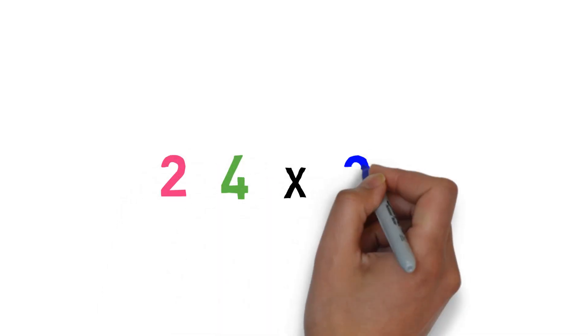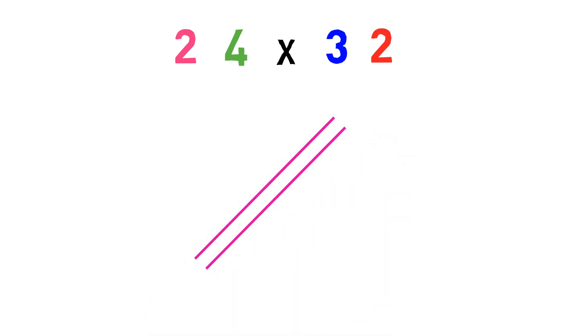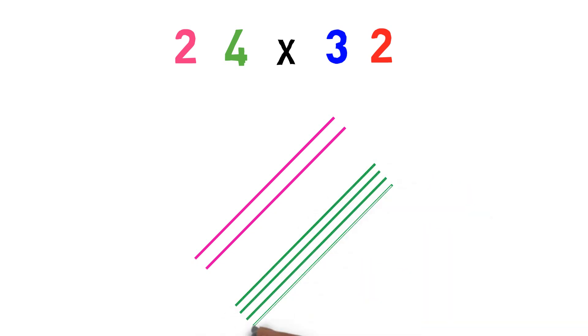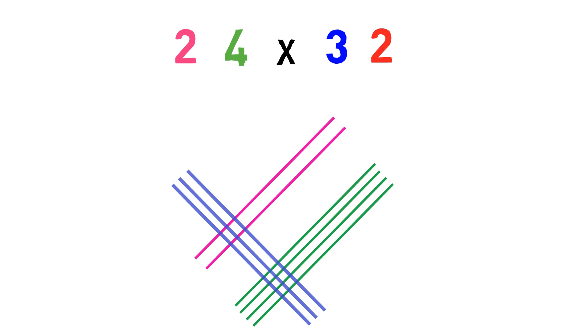So for this let's take a number, let's say 24 and 32. Friends, here also I'll draw the similar lines as we did earlier. So for two I draw two lines. Now for four I'll draw four lines in green color. For three I'm drawing three lines in blue color, and for two I'm drawing two lines in red color.